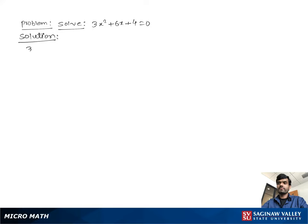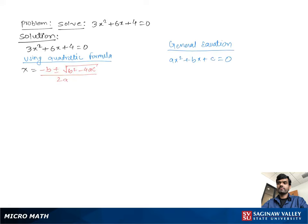Solve 3x squared plus 6x plus 4 equal to 0. Now using the quadratic formula, x equal to negative b plus minus square root b squared minus 4ac over 2a.